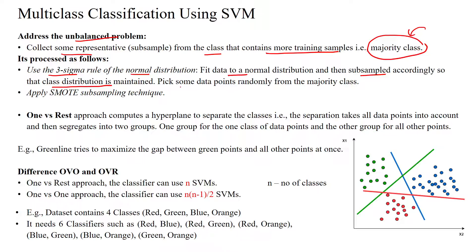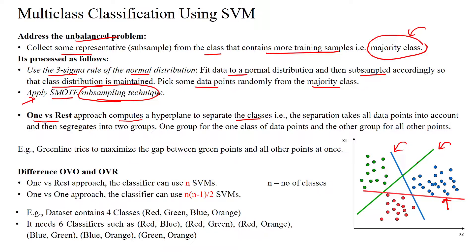For that, we can use the three sigma rule of the normal distribution. We can fit the data into the normal distribution, then subsample accordingly so that the distribution of the data can be well maintained. From the distribution, we can select random data points from the majority class. We can apply smart subsampling — there are different subsampling approaches. In the one versus rest approach, which calculates the hyperplane for each class separately, we need three classifiers — one subclassifier for each class.